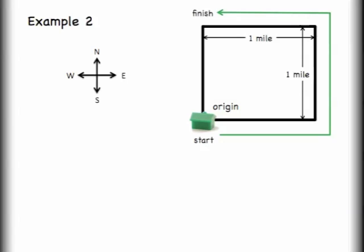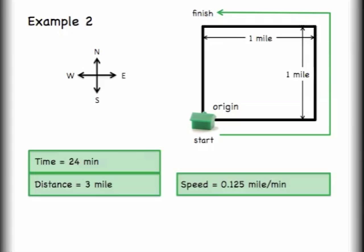Let's go to another example. In this example, I'm going to start at my house. I'm going to travel a mile to the east, then I'm going to go north for a mile, then I'm going to turn back and go west for one mile. Let's say that I was traveling at the same rate and so that means that it took 24 minutes for me to do this run. I traveled a distance of three miles and I have my speed there which was again 0.125 miles per minute.